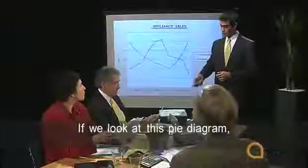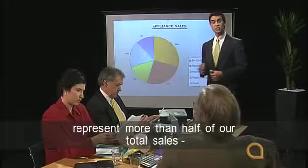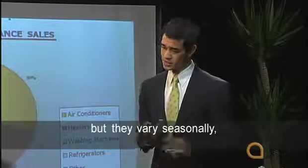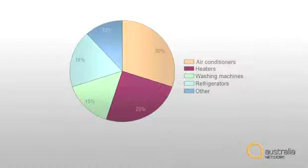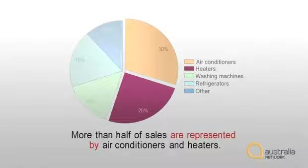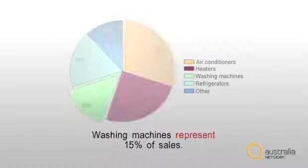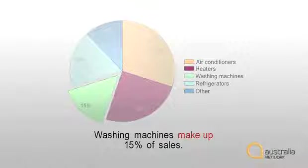Finally, look at how Tan talks about his pie diagram. If we look at this pie diagram, you can see that air conditioners and heaters together represent more than half of our total sales, but they vary seasonally, while other appliances are fairly steady through the year. Tan says air conditioners and heaters represent more than half of sales — this means they account for more than half. We could say: washing machines represent 15% of sales, washing machines account for 15% of sales, washing machines make up 15% of sales.